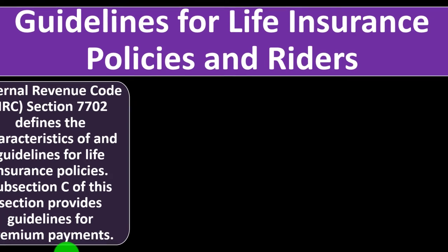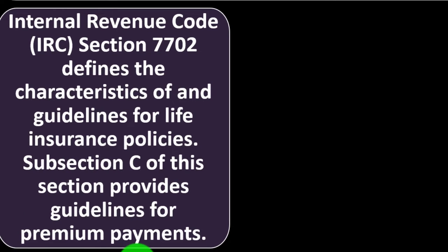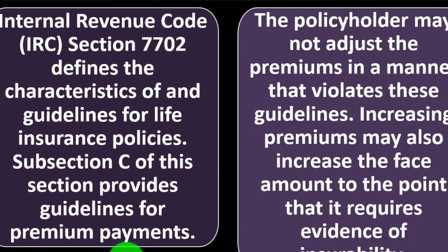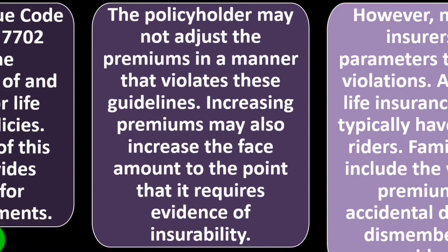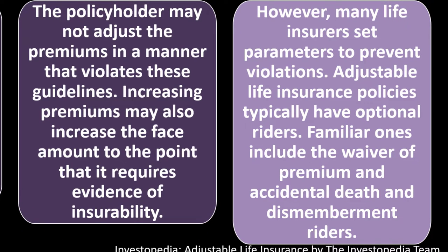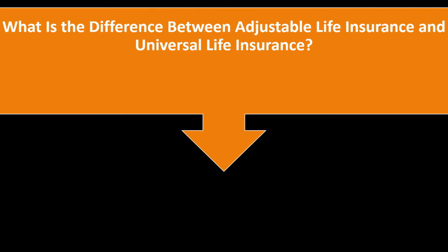Internal Revenue Code IRC Section 7702 defines the characteristics of and guidelines for life insurance policies. Schedule C of this section provides guidelines for premium payments — the policyholder may not adjust premiums in a manner that violates these guidelines. Increasing premiums may also increase the face amount to the point that it requires evidence of insurability. However, many life insurers set parameters to prevent violations. Adjustable life insurance policies typically have optional riders, including the waiver of premium and accidental death and dismemberment riders.